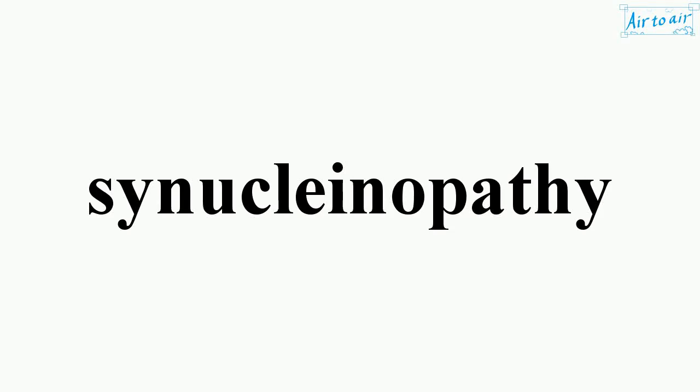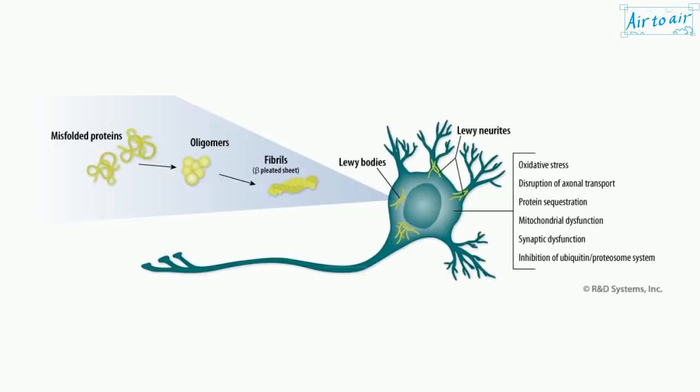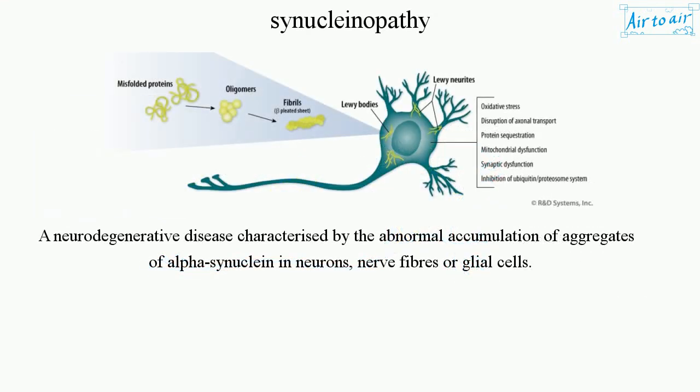Synucleinopathy: a neurodegenerative disease characterized by the abnormal accumulation of aggregates of alpha-synuclein in neurons, nerve fibers, or glial cells.